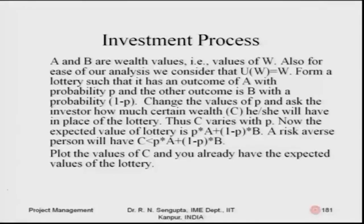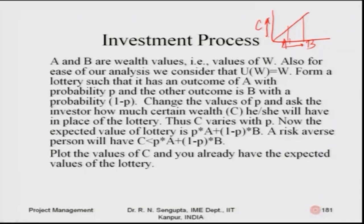Consider again A and B as the wealth values. If you remember, I drew the diagram and explained how we can find out the certainty value — certainty value is measured along the Y axis, and the investment is here. A was here, B was here, and you made a decision along the forty-five degree line. So what I discussed in the last slide of the sixteenth class I will start the seventeenth class with a discussion of that slide.